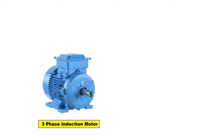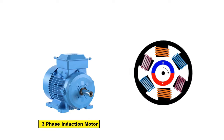If you work in an electrical field, then you must have known that the 3-phase motor we use has 3-phase winding inside. Now inside this motor, 3 windings are there. So at the outside, we get total 6 wires, which are used for connection.